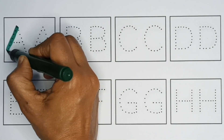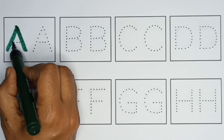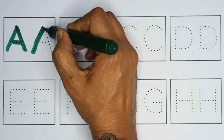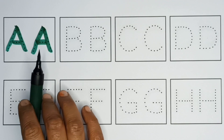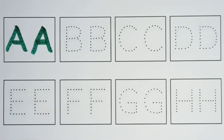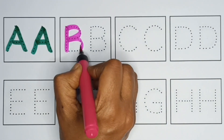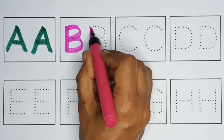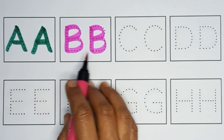A. A for apple. A. Green colour. B. B for ball. Purple colour. B.